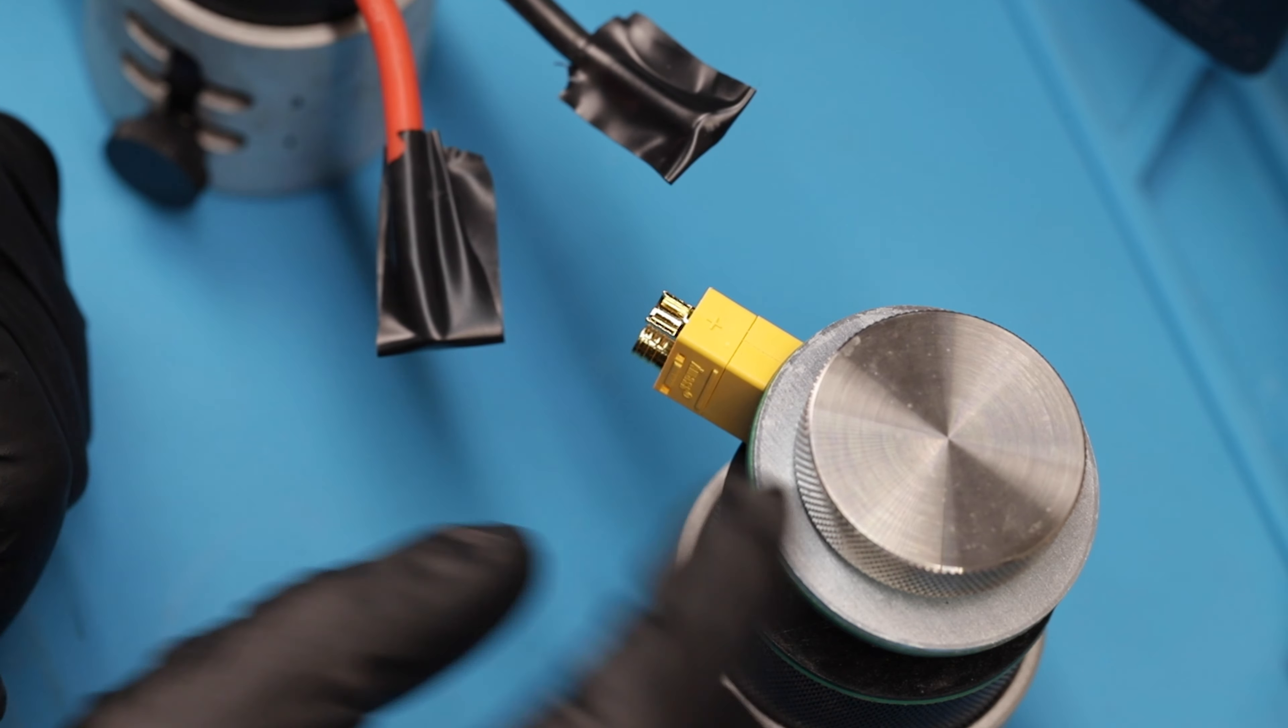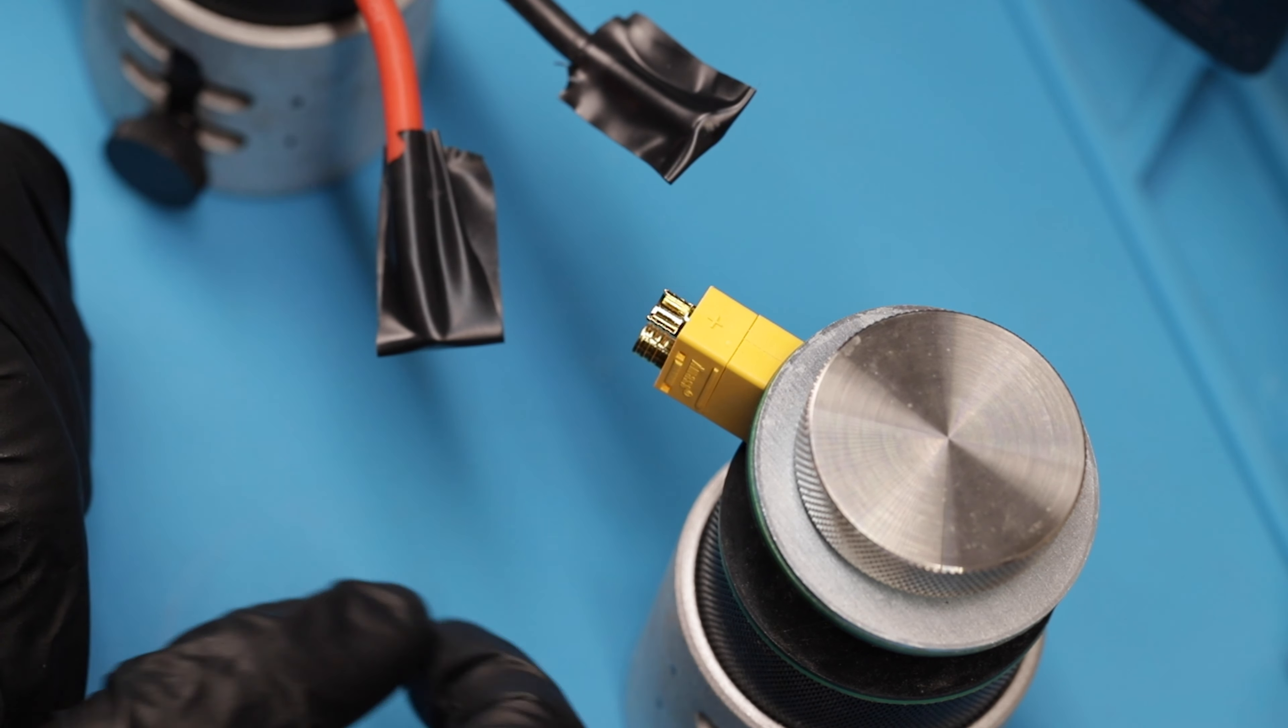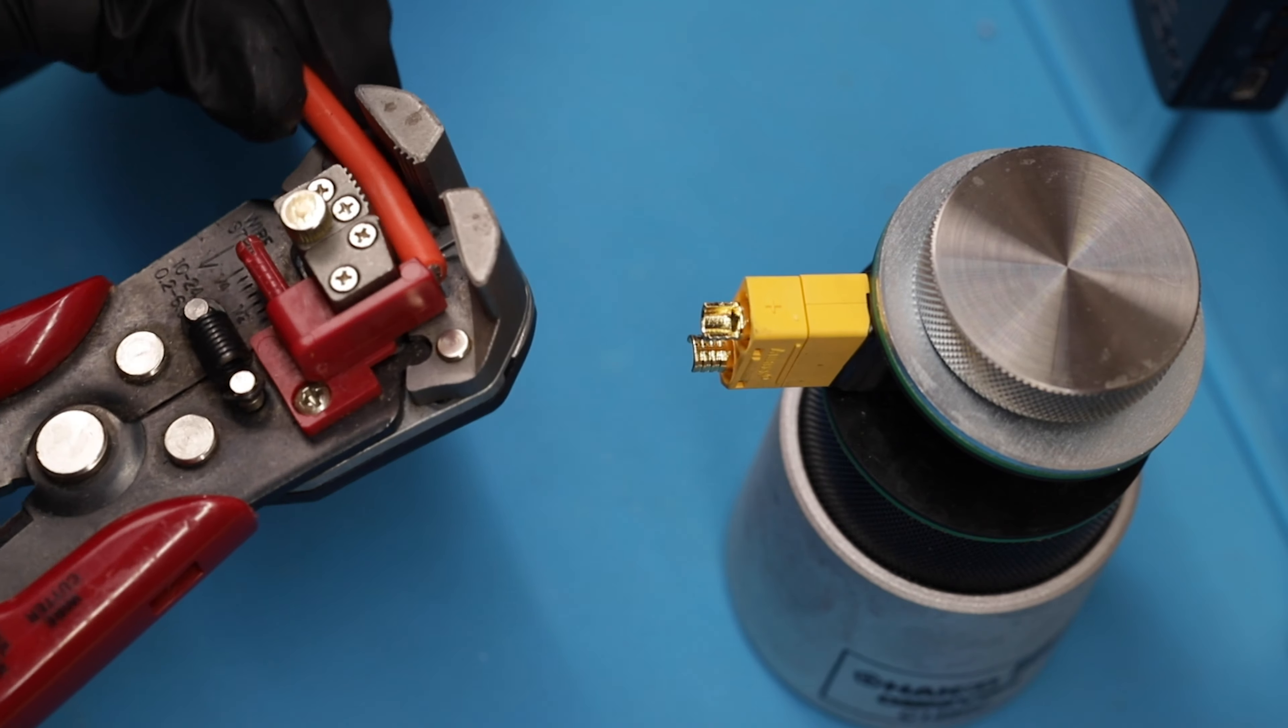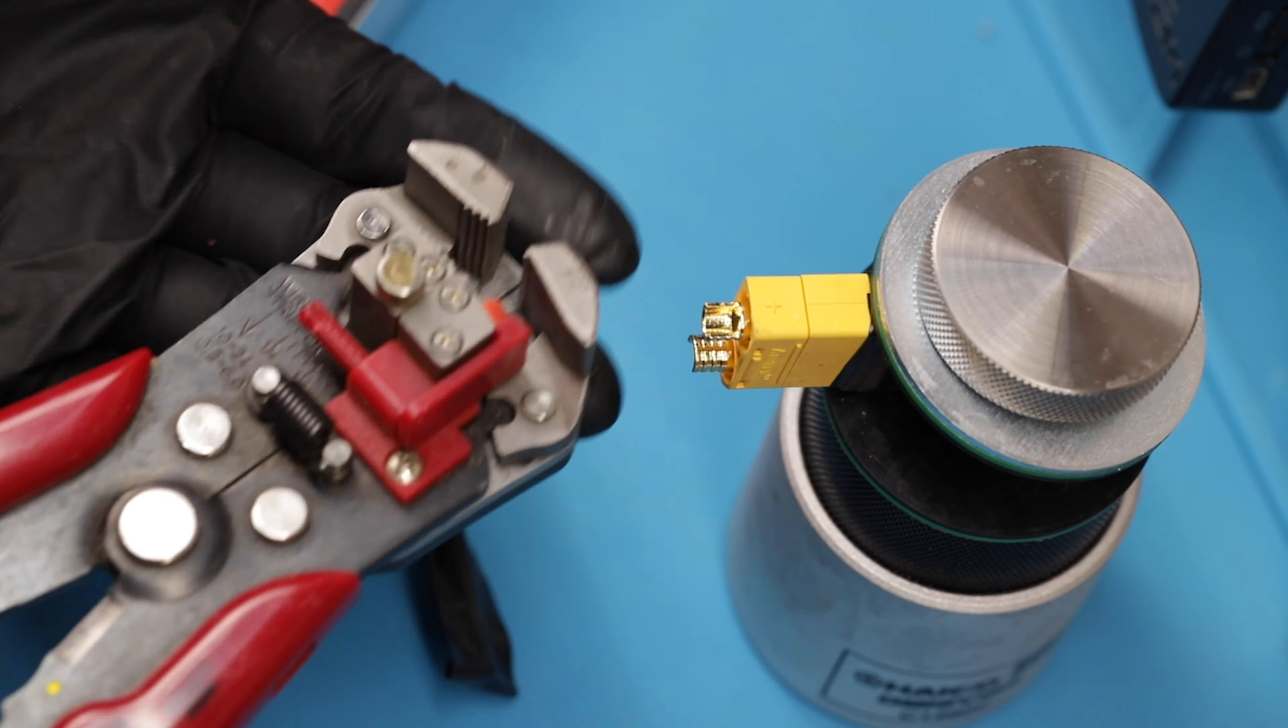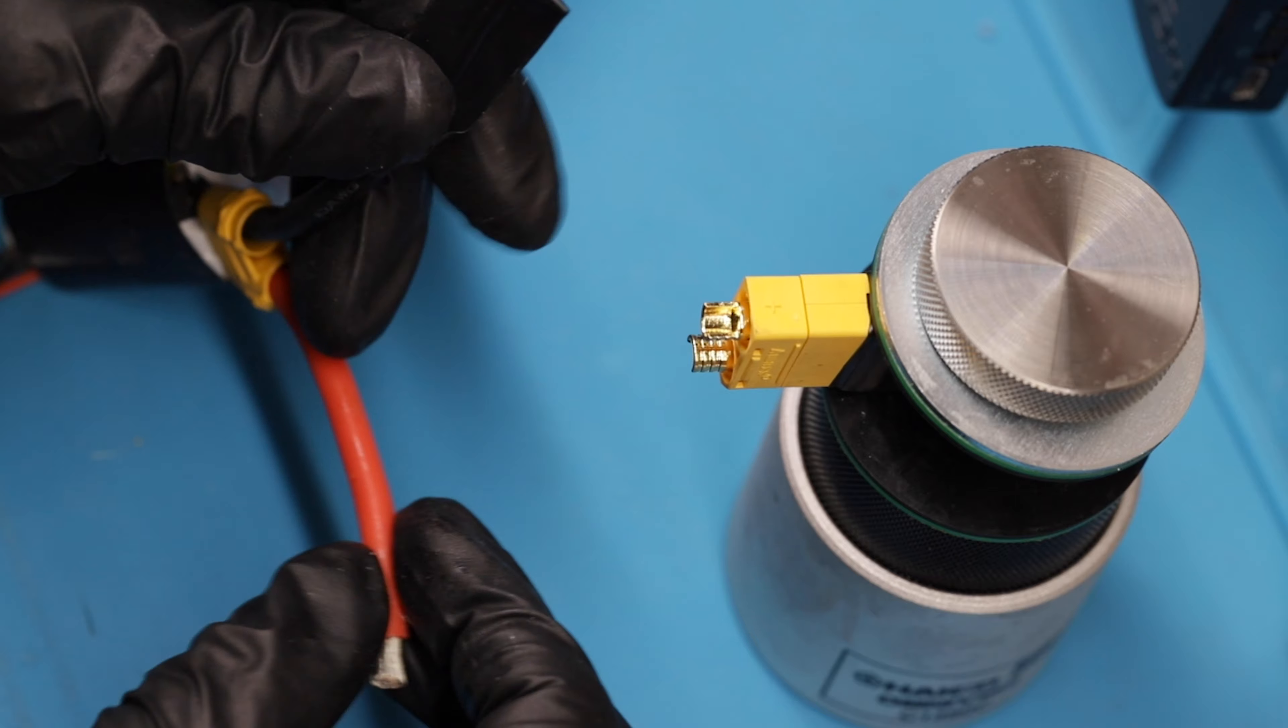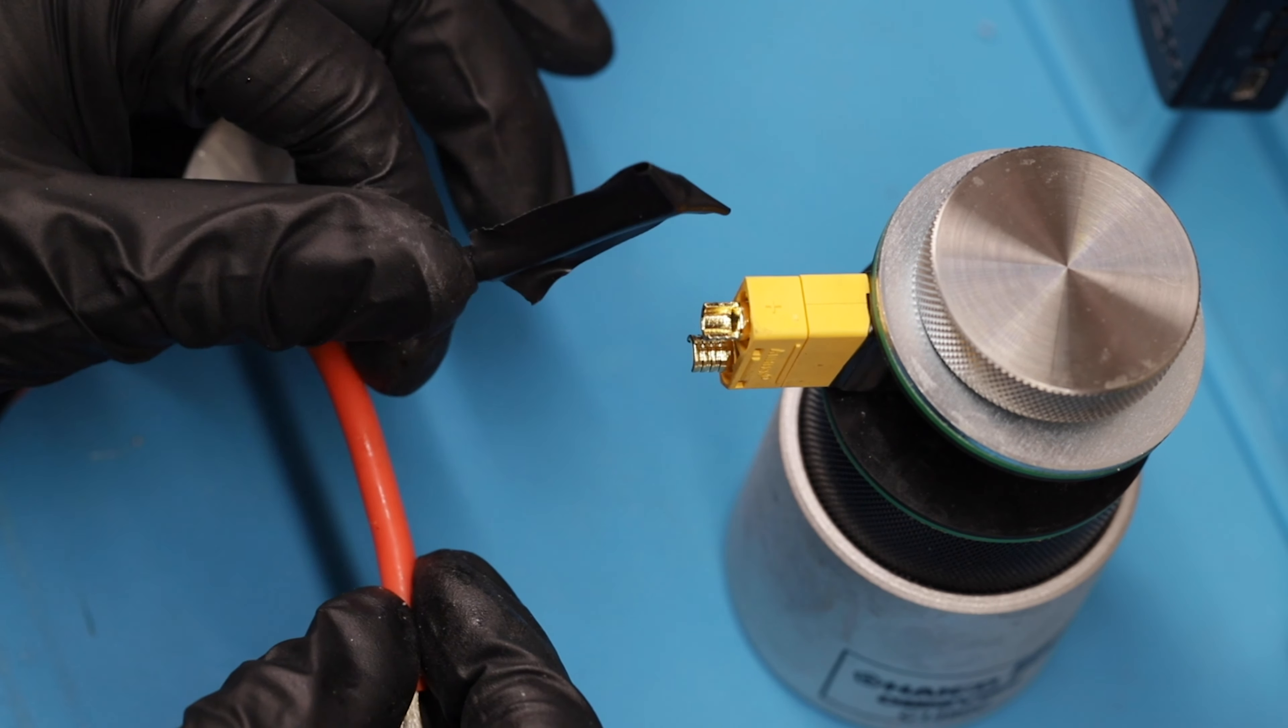On this XT90 connector you want to make sure that you get positive to positive and ground to ground. First we need to prep our cable and our terminal. This is an electrician's tool that I've had for over ten years. I'll look on Amazon see if I can find something like it. If I can I'll link to it in the description. And again work on one wire at a time. I'm gonna keep this one taped until I'm ready for it.